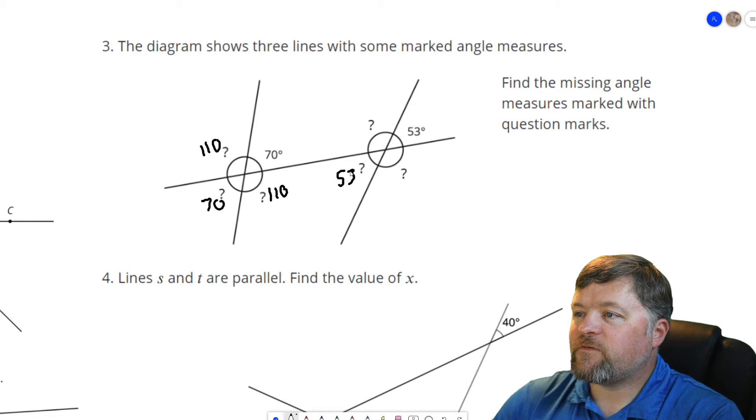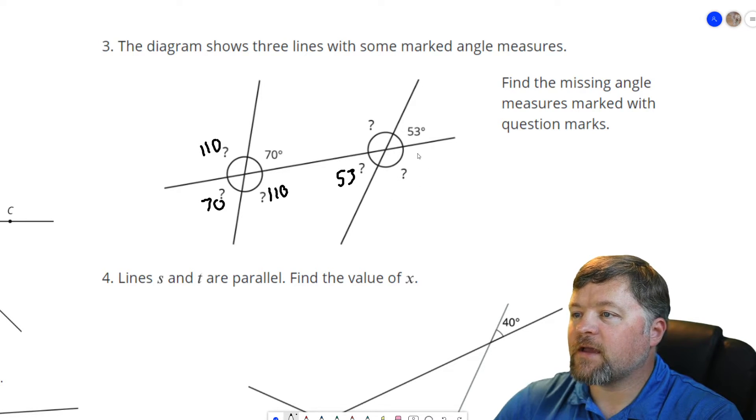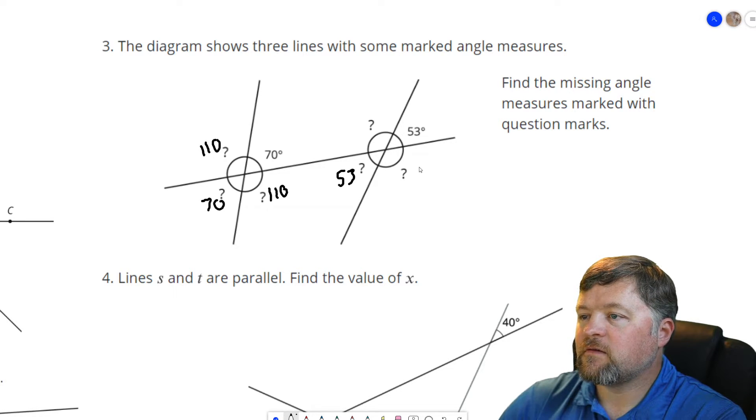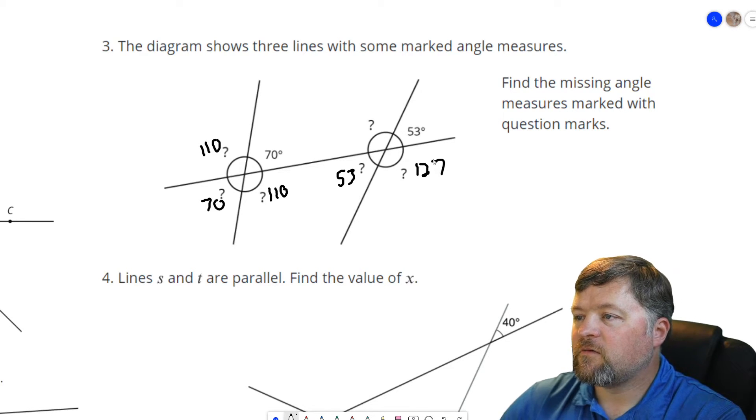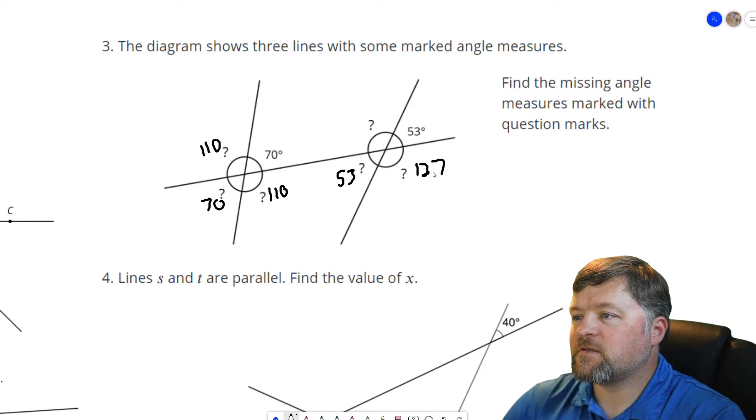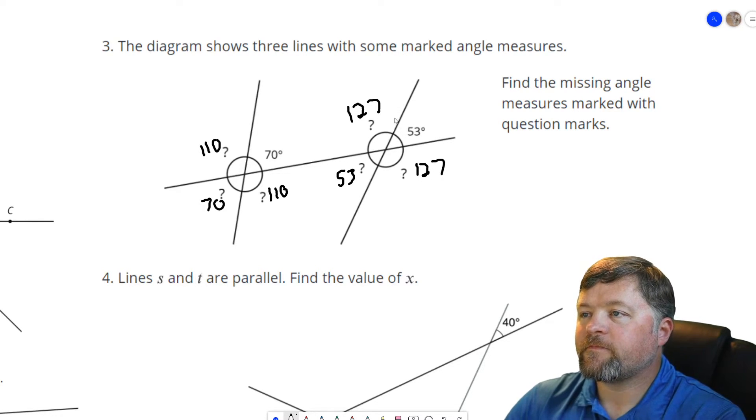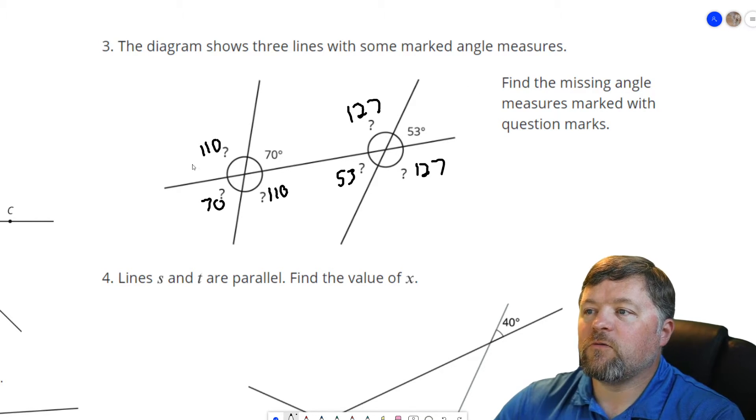If this is 53, these two angles have to combine to be 180. So if this is 53, this has to be 127 degrees. And if this is 127, this is also 127. So we got all four angles there, all four angles there.